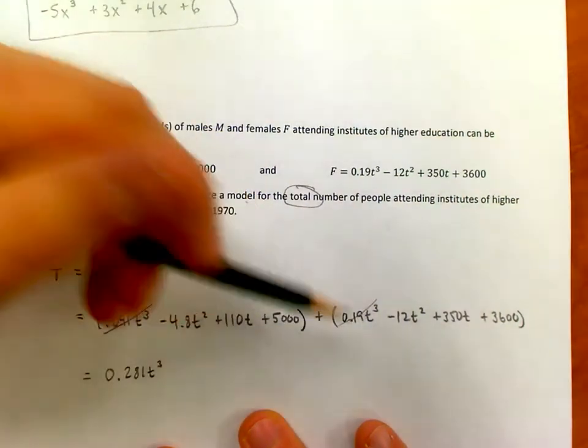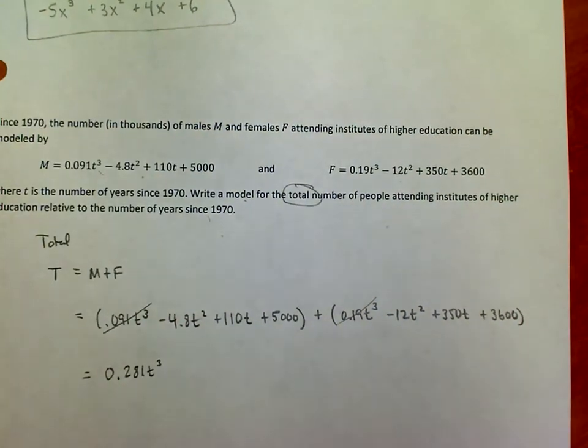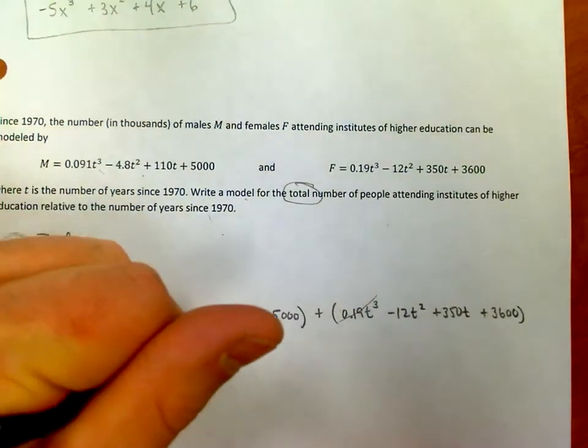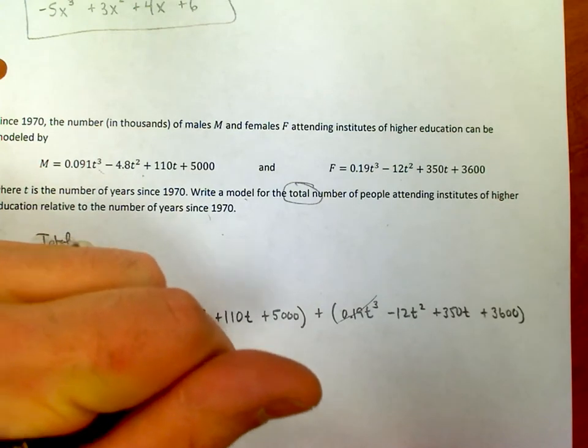0.281t³, that takes care of this term and this term. As far as the t² go, that looks like it adds up to negative 16.8. You can check it on your calculator if you don't believe me. That's what calculators are for.